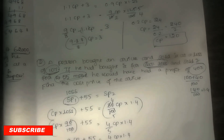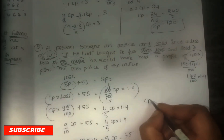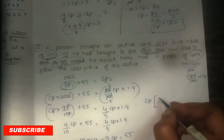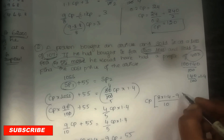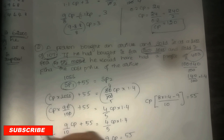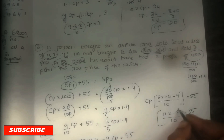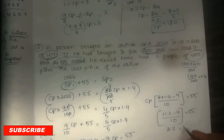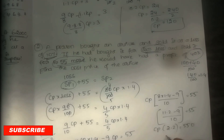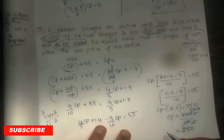Put all CPs on one side: (4/5) CP × 1.4 − (9/10) CP = 25. Taking CP outside and LCM: (8 × 1.4 − 9) / 10 = (11.2 − 9) / 10 = 2.2/10. So CP × (2.2/10) = 25, giving CP = 250/2.2 × 10. Solving, CP is equal to Rs. 250.